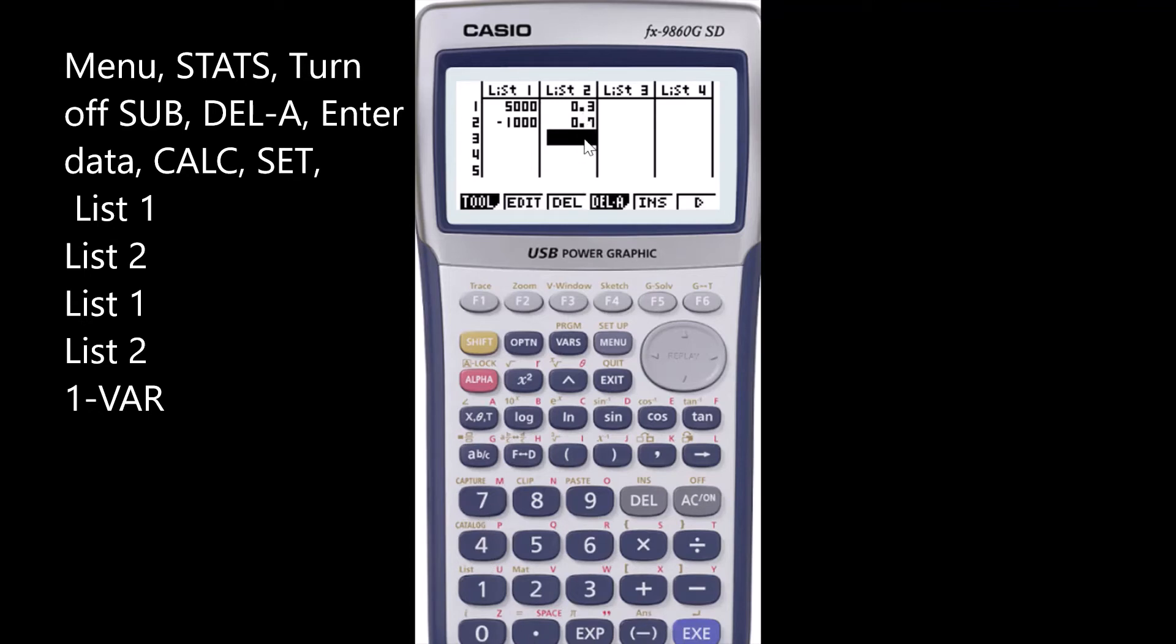Quickly check that the total should add up to 1, meaning you haven't missed any. In this case, 0.3 plus 0.7 is 1.0. Once you've done that, click F6 so you've got this main page which shows calculate. We'll click F2.